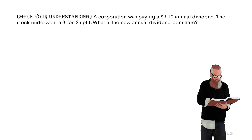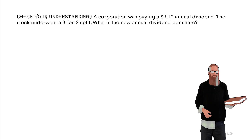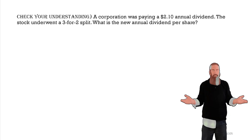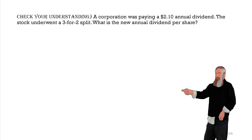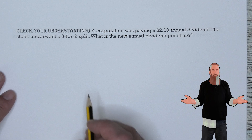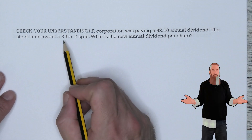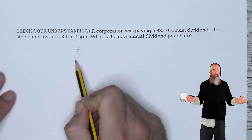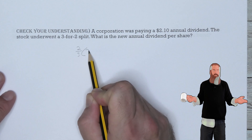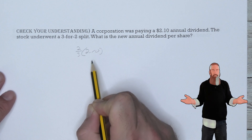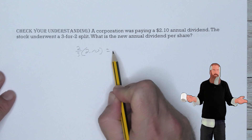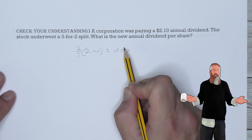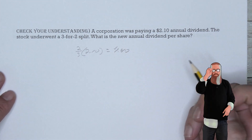Let's check our understanding. A corporation was paying a $2.10 annual dividend. The stock underwent a three-for-two split. What is the new annual dividend per share? We set up the three-for-two split as the fraction two-thirds and multiply it by the dividend amount of $2.10: (2/3) × $2.10 = $1.40. The new annual dividend per share is $1.40.